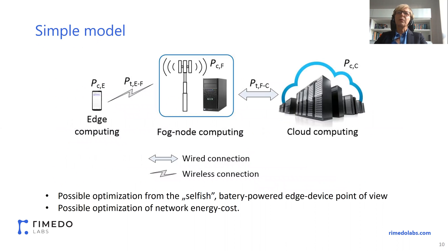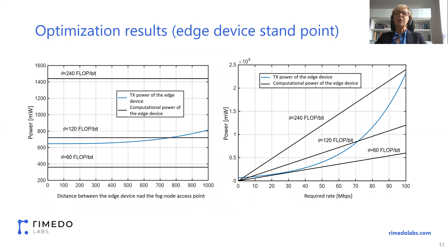Here is a simple model to consider, which consists of an edge device, a fog node, and the cloud, and the possible optimization is twofold. On one hand, we can have optimization from the selfish battery-powered edge device point of view, as well as optimization of the whole network. On this slide, we can see power versus the distance between the edge device and the fog node access point. The black lines represent the power required for computations, and the blue line is the power for transmission. Depending on the complexity of the task, the power required for computations may exceed the transmission power, or vice versa.